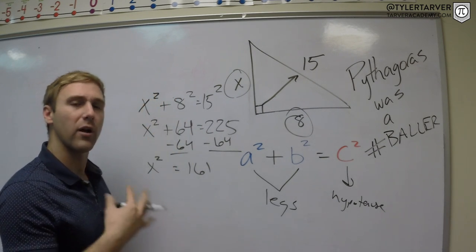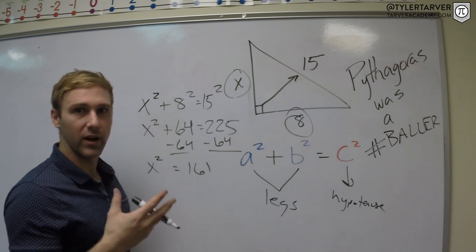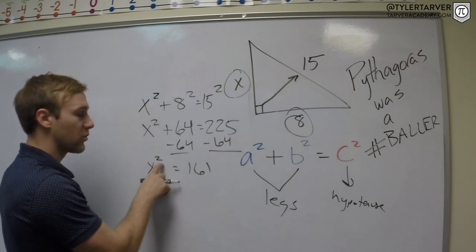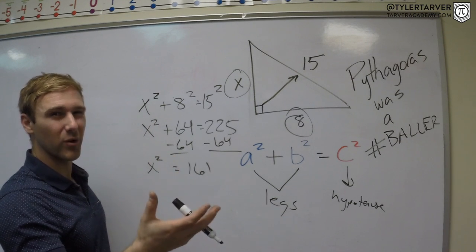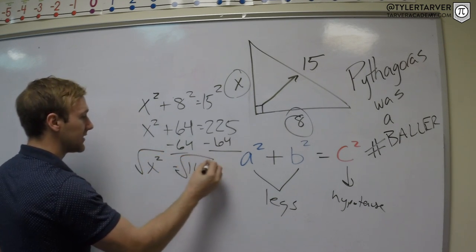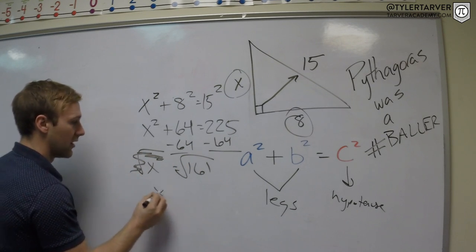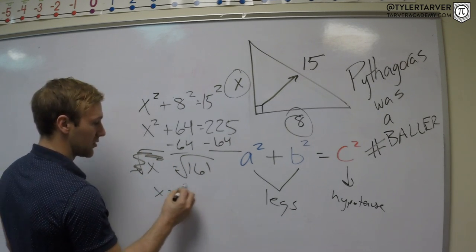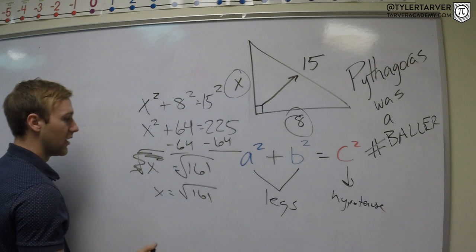Square rooting. Way to remember that is on your TI calculator, wherever your X squared is, if you hit second and then hit that, it's square root. They put them on the same button. So square root both sides, that cancels these out. You can put it as X equals radical 161. They might want you to simplify the radical.